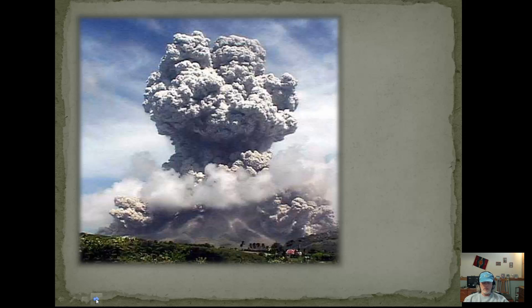Factors that affect eruptions include dissolved gases. Gases that can be trapped in magma include water and carbon dioxide. When these gases get trapped in volcanoes, you can get very explosive eruptions. The higher the viscosity, the harder it is for these gases to escape, and when they do come out, it's with a big explosion.